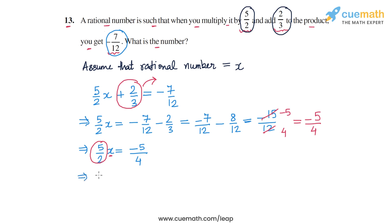So on the left hand side we will get x only, x will be left and on the right hand side we will have -5/4 divided by 5/2. So this we can write as -5/4 into 2/5. So 4 divided by 2 is 2 and this 5 and 5 cancel out. So we are left with only -1/2.